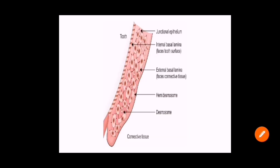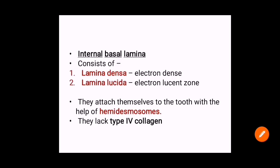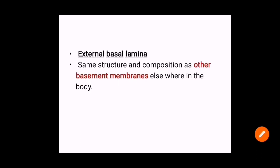Looking at a more detailed picture: the internal basal lamina faces the tooth surface, and the external basal lamina faces the connective tissue. The internal basal lamina consists of two layers — lamina densa (an electron-dense layer) and lamina lucida (an electron-lucent layer) — and they attach to the tooth surface with the help of hemidesmosomes, and they lack type 4 collagen. The external basal lamina has the same structure and composition as other basement membranes elsewhere in the body.